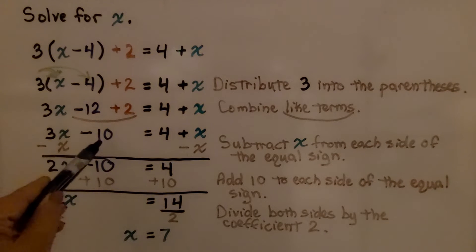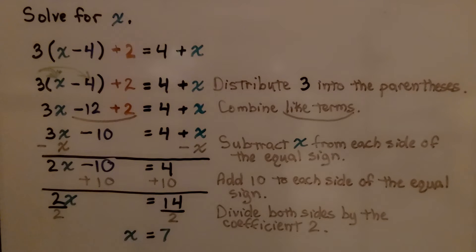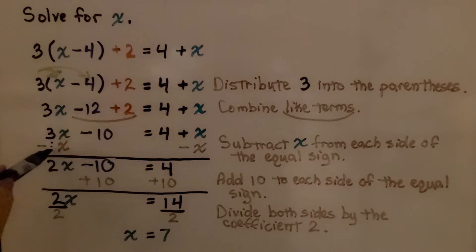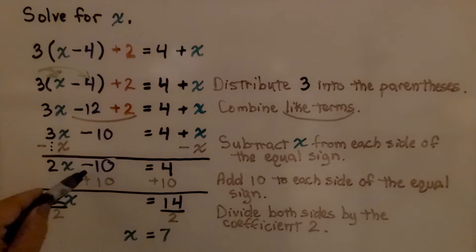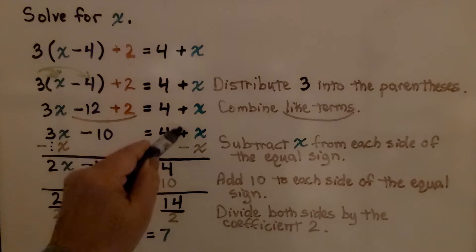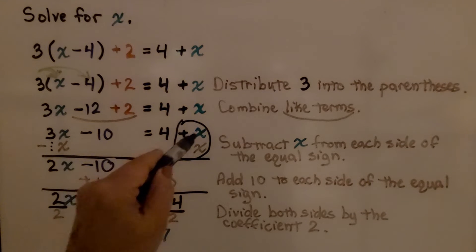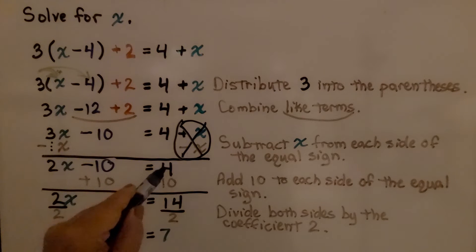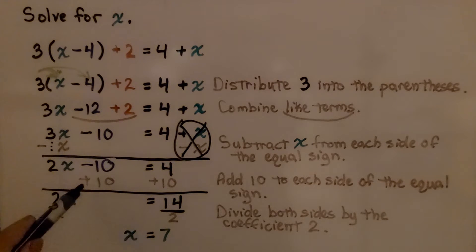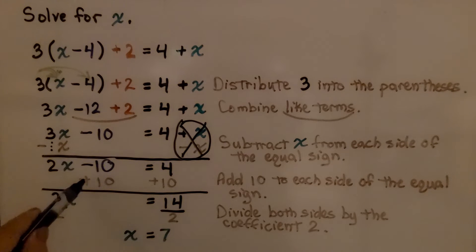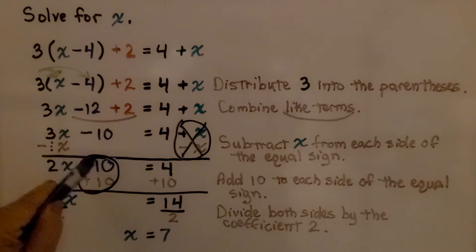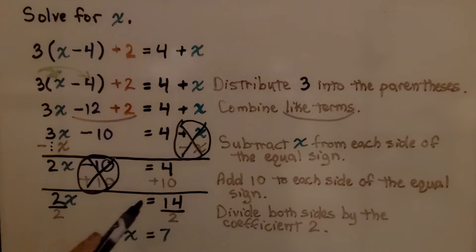Now we have 3x minus 10 is equal to 4 plus x. We can subtract x from each side of the equal sign. If we have 3x and we take away 1x — remember there's an invisible 1 here — that's going to leave us with 2x minus 10. On this side, if we take away an x, we have plus x minus x, that creates a zero pair, and we only have 4 on this side. Now we can add 10 to each side. That creates a zero pair and eliminates it. We're left with 2x is equal to 14, since 4 plus 10 is 14.